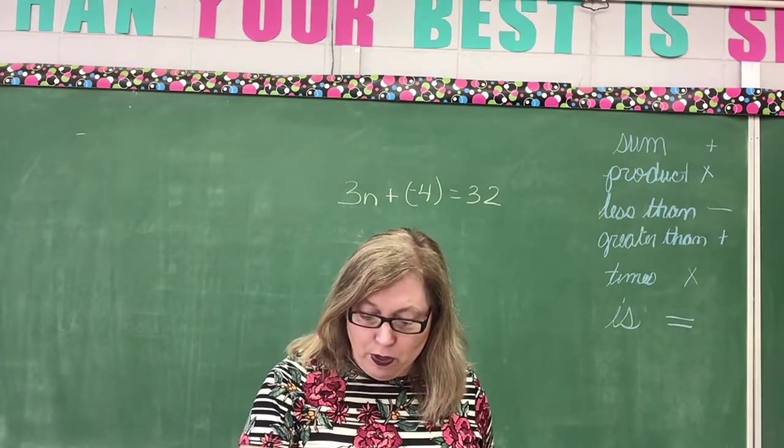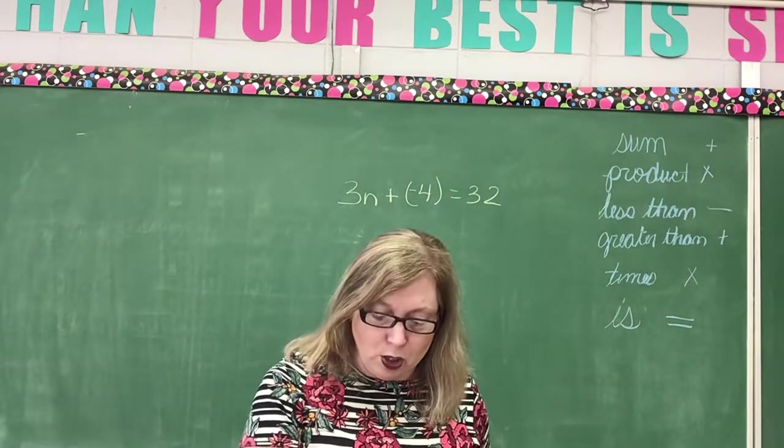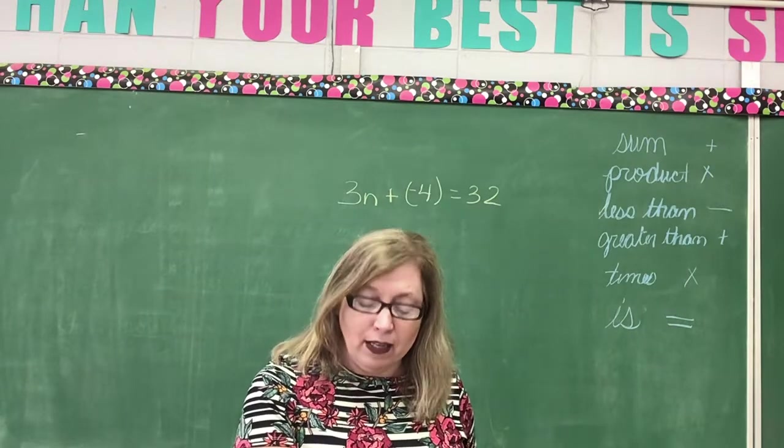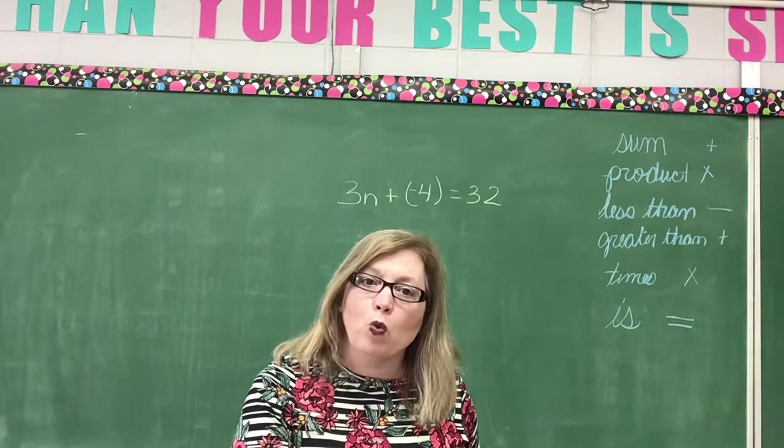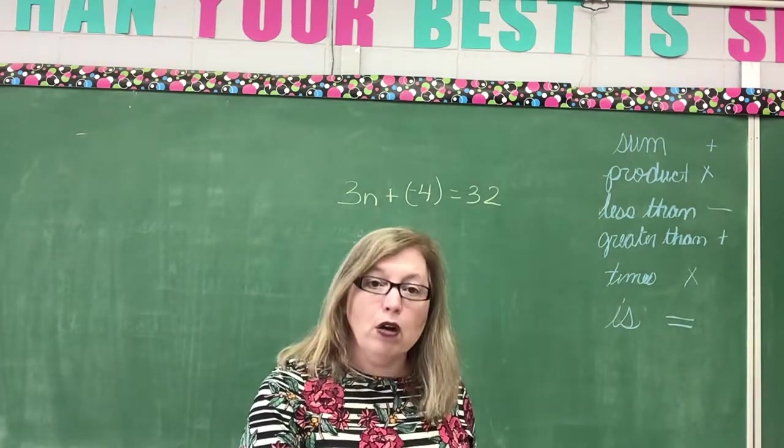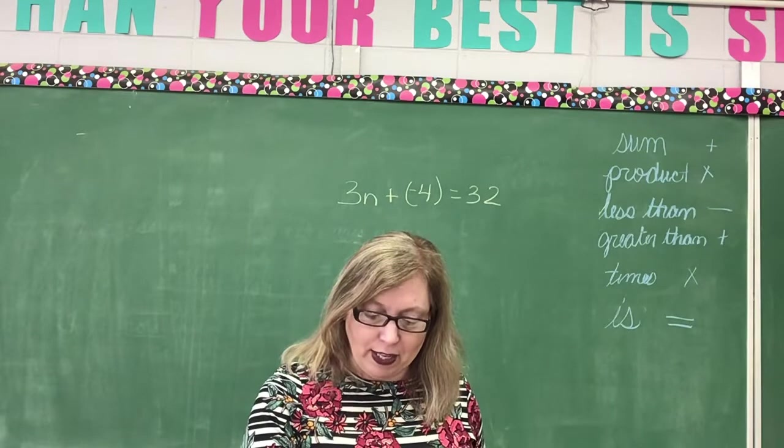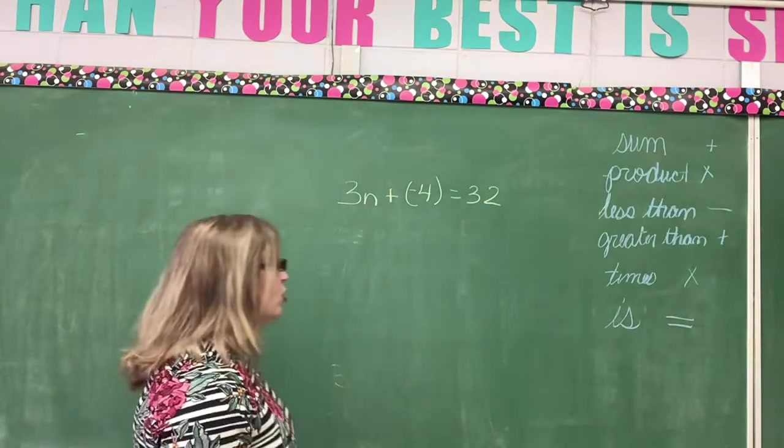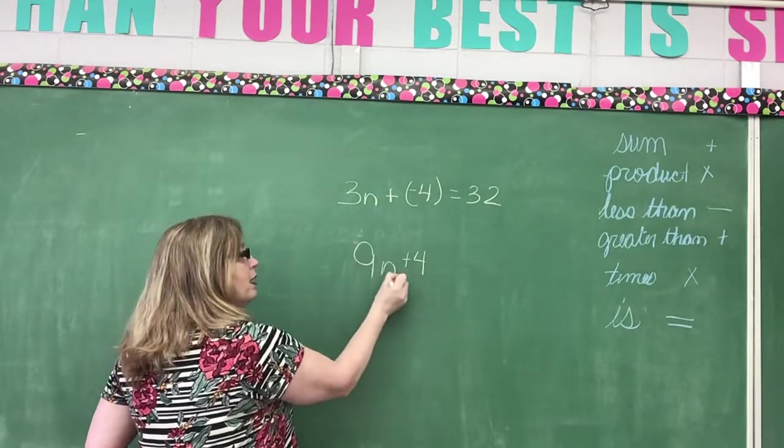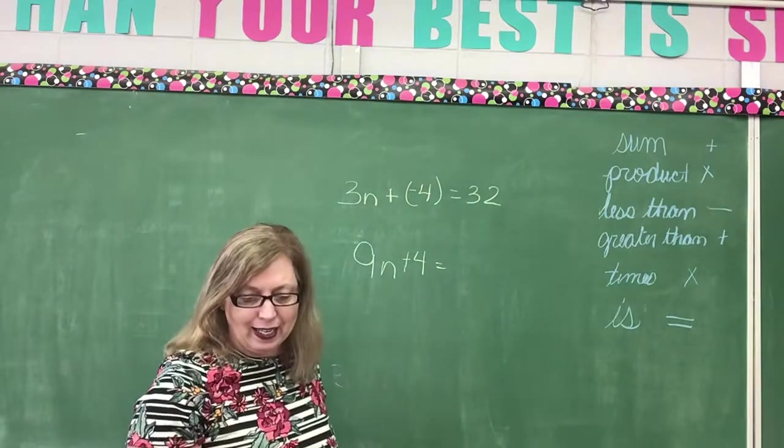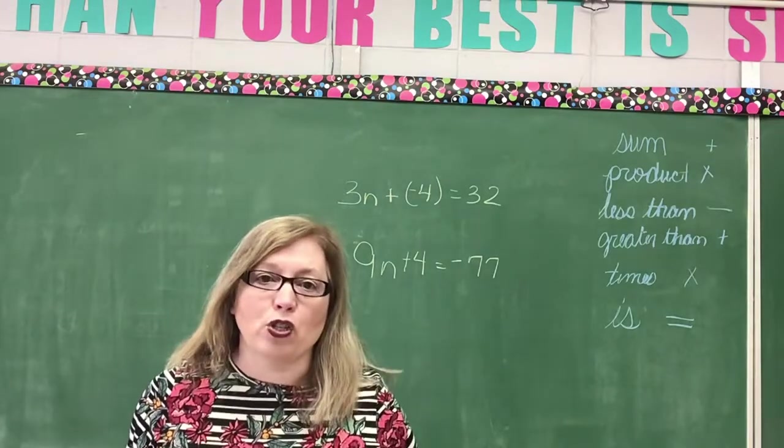Okay. So the sum of 3 times a number and negative 4 is 32. Look at the next one. 4 more than 9 times a number is negative 77. What's your equation? Look for your clue words. 4 more than 9 times a number is negative 77. Okay. So we said it was 4 more than. So we're going to put that with more than what? Well, 9 times a number equals or is negative 77. I hope you got both of those equations correct today.